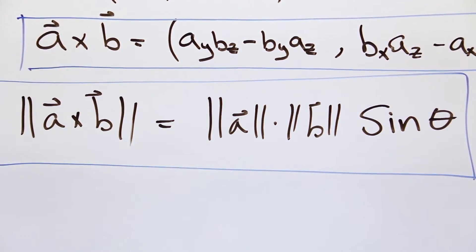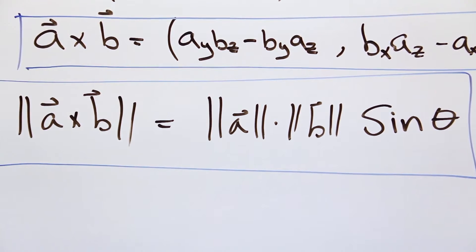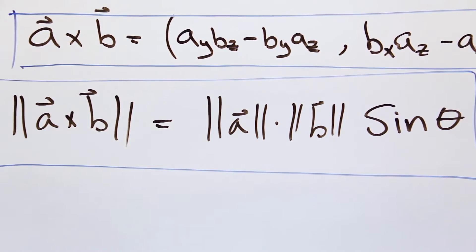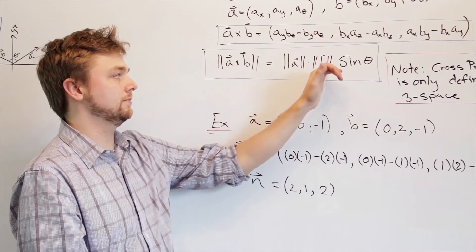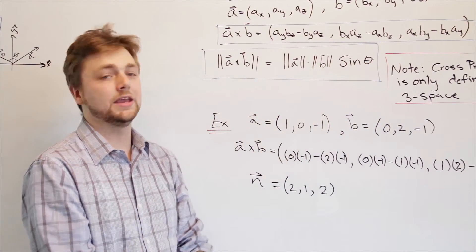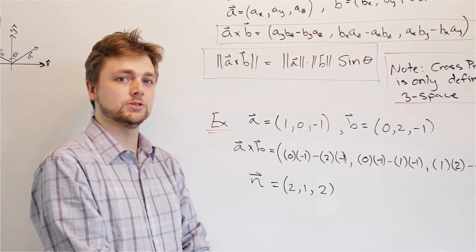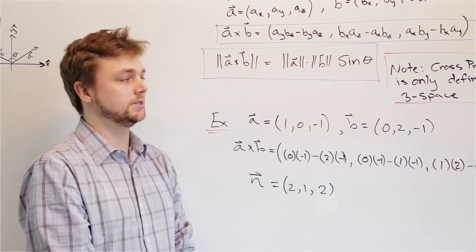Another formula that we may find useful is that because this is a vector, it also has a magnitude. So the magnitude of the cross product will actually be the magnitude of a times magnitude of b times sine of the angle between them. Again, the angle between them referring to the angle that's measured from one vector to the other when they're joined tail to tail.